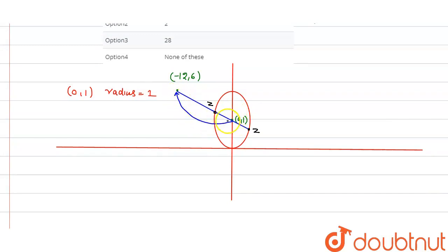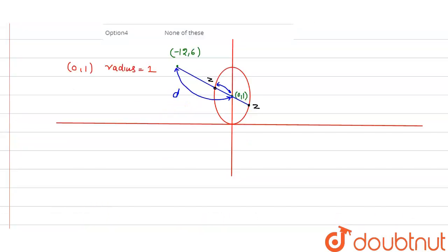To find the minimum distance, subtract the radius from d; to find the maximum, add the radius to d. Since the radius r = 1, we can write: d - r < |z + 12 - 6i| < d + r.